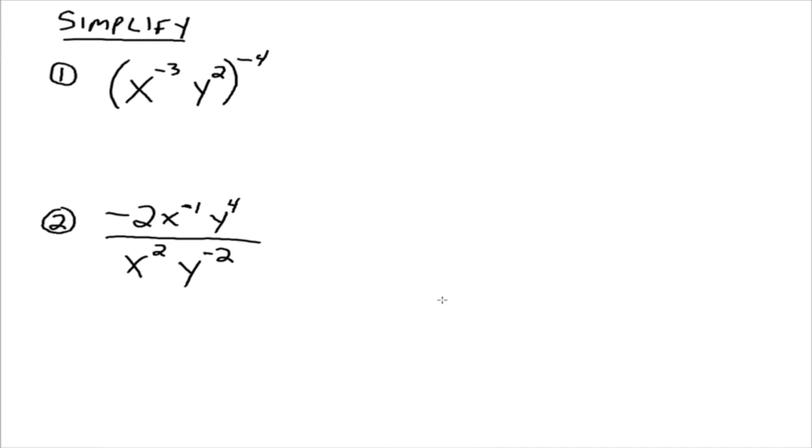All right, example 1. Simplify x to the negative 3 times y squared and all of that raised to the negative 4. Now, there are many ways you could go about starting these problems, but in the end, we should all end up at the same spot. So I'm going to, since we just have one term inside here, I'm going to use that property that says we've got powers here raised to more powers, and so we multiply these exponents. So we would have x to the negative 3 times negative 4, which gives you 12, and then y to the negative 8.